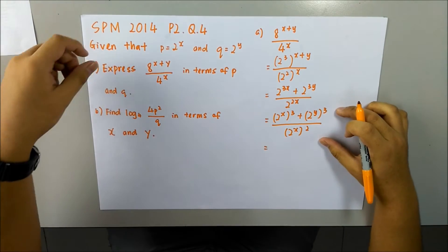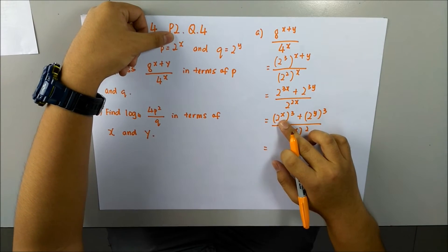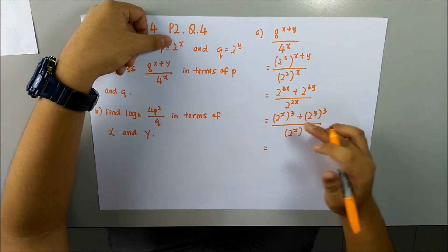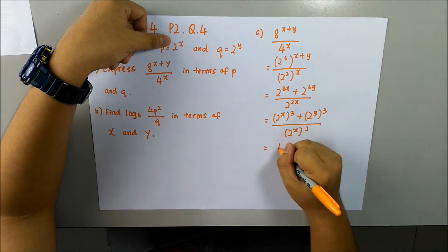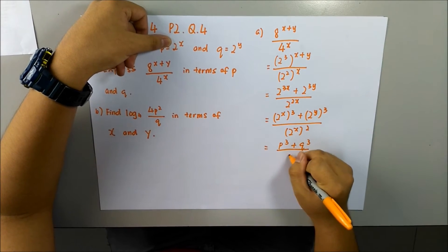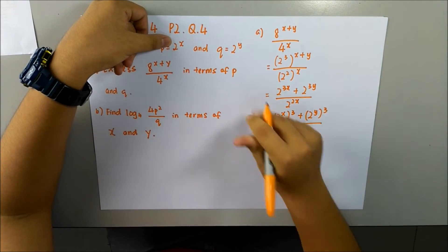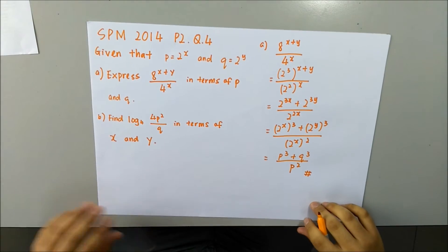Now in this form, we can substitute since 2 to the x is p. It is correct, so it is compatible, so we can sub it. So p cubed plus q cubed over p squared. That's it for question part a.